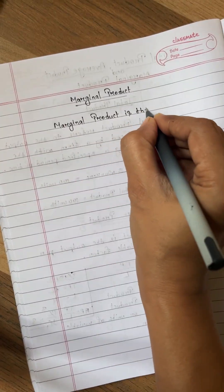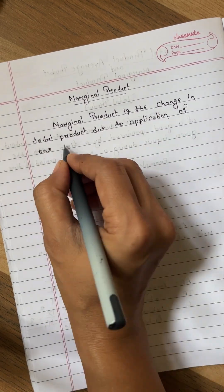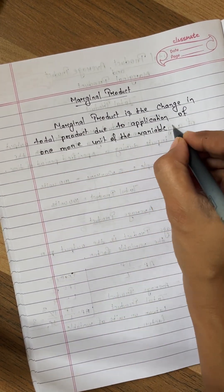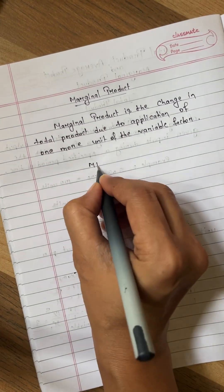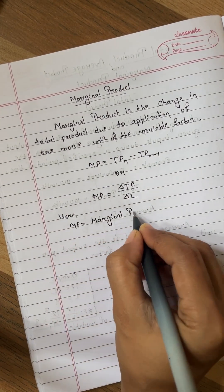Now let's see what is marginal product. Marginal product is the change in total product due to application of one more unit of the variable factor. It is calculated as MP is equal to TP N minus TP N minus 1. The other formula of MP is MP is equal to delta TP upon delta L.